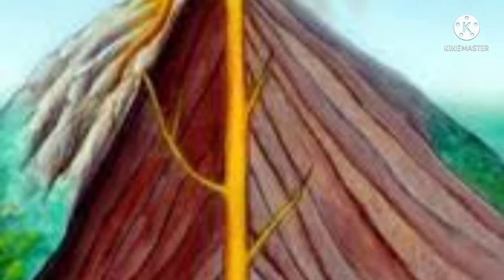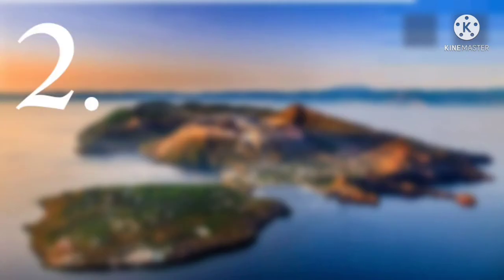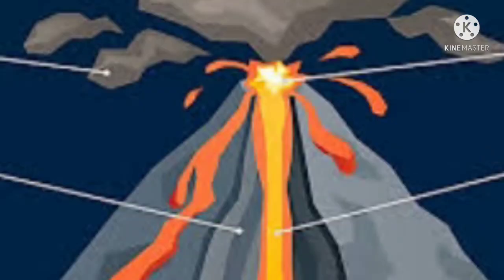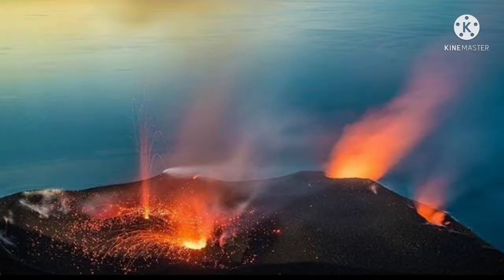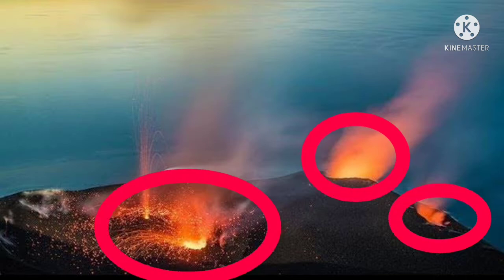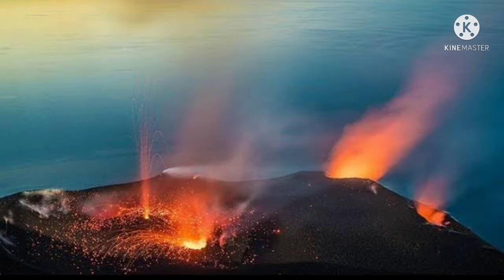During an eruption, volcanic materials move from the magma chamber towards the surface via a pipe-like passageway called a conduit. Some volcanoes have a single conduit, while others have a primary conduit with one or more additional conduits that branch off it. A vent is an opening on the surface of a volcano that emits lava, gases, ash, or other volcanic materials. Some volcanoes have multiple vents, but there is only one main or central vent.